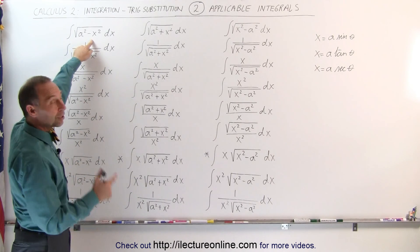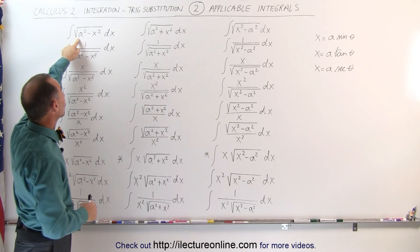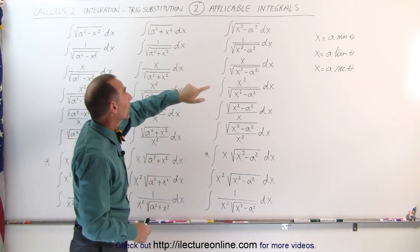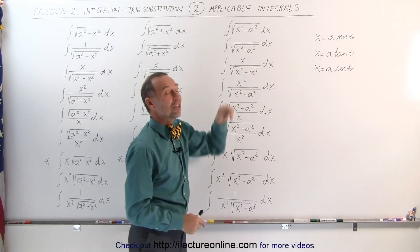Remember the type that we talked about on the previous video. We have the square root of a squared minus x squared, the square root of a squared plus x squared, and the square root of x squared minus a squared.